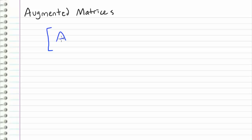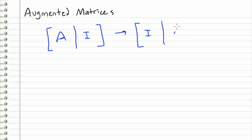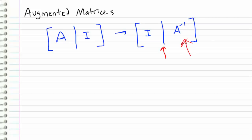For example, I had a matrix A and I augmented it with the identity matrix, and what I did is I row reduced this left side to the identity matrix, and what I was left with on the right side was the inverse of our matrix A.